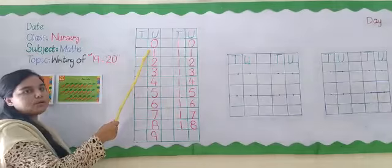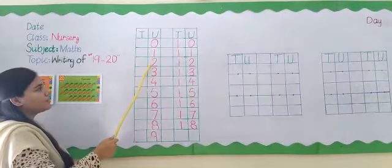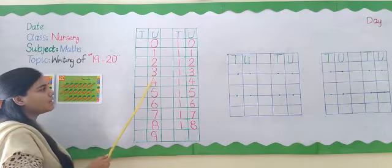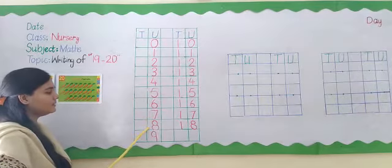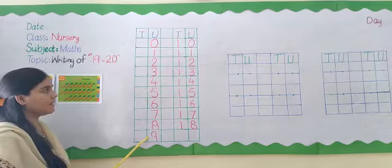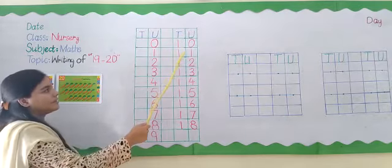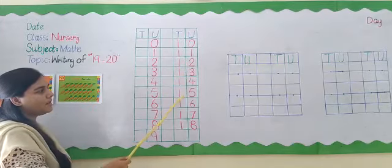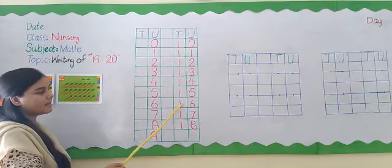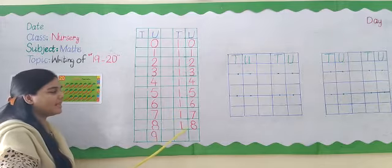0, 1, 2, 3, 4, 5, 6, 7, 8, 9, 10, 11, 12, 13, 14, 15, 16, 17, 18.